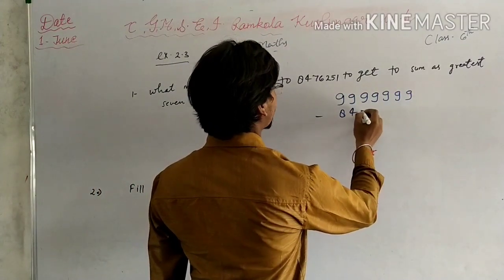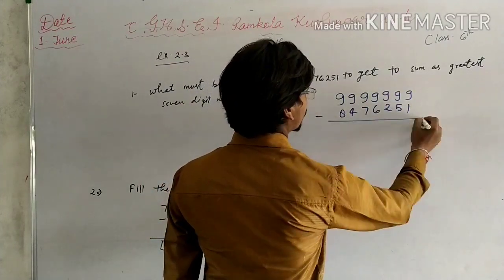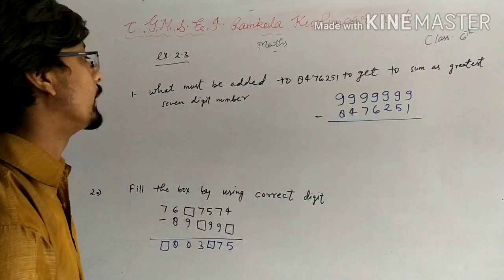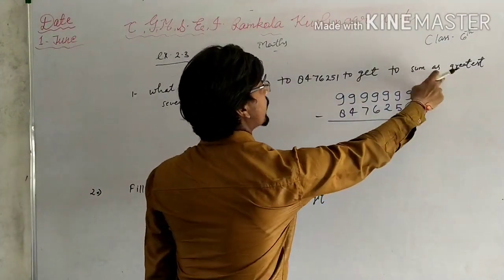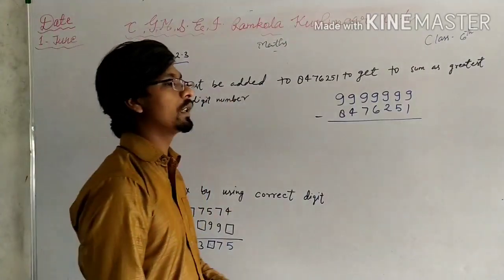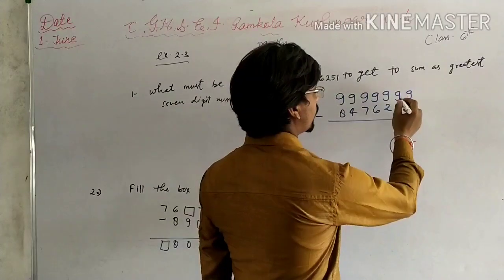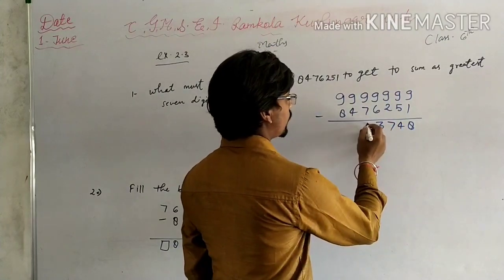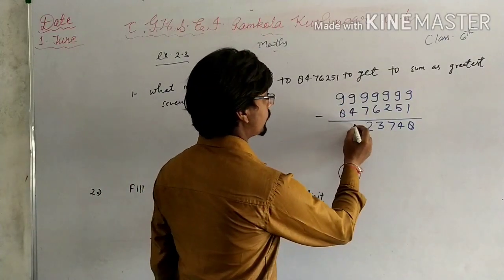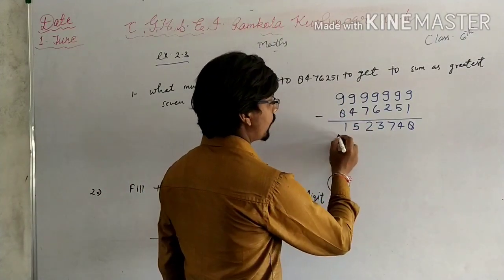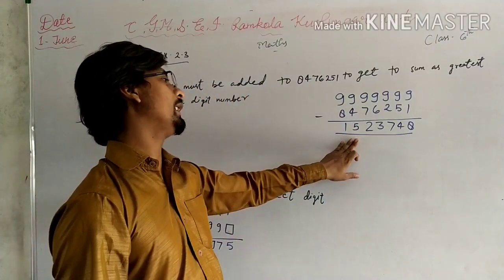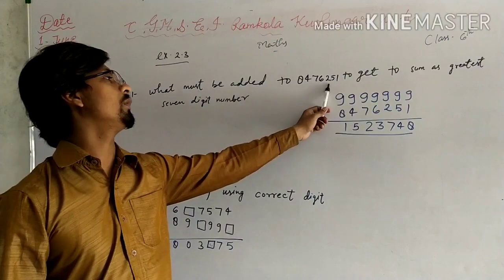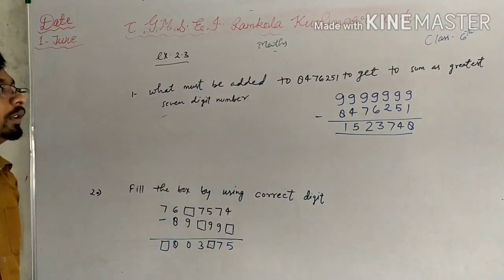After subtraction, the difference will be the number that must be added to get the greatest 7-digit number. Start the subtraction: 9 minus 1 equals 8, 9 minus 5 equals 4, 9 minus 2 equals 7, 9 minus 6 equals 3, 9 minus 7 equals 2, 9 minus 4 equals 5, and 9 minus 8 equals 1. This is the difference: 15,23,748. This number will be added to 8,476,251 to get sum as greatest 7-digit number.